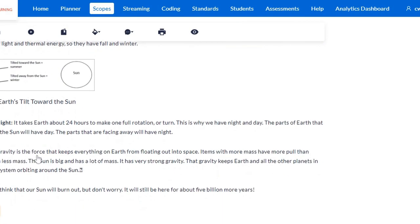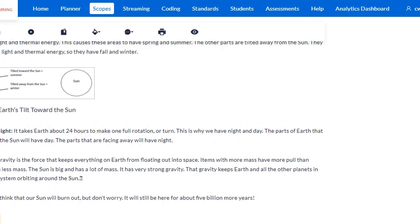Let's keep reading. Day and night. It takes Earth about 24 hours to make one full rotation or turn. This is why we have night and day. The parts of Earth that are facing the sun will have day. The parts that are facing away will have night.